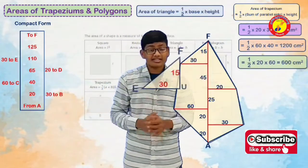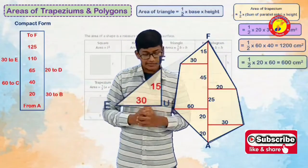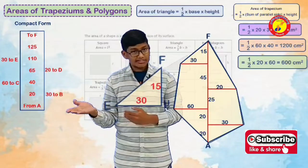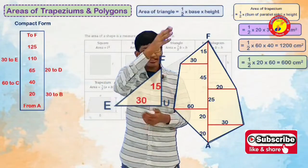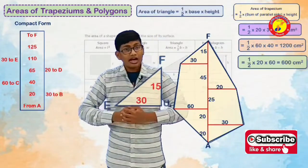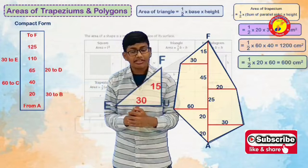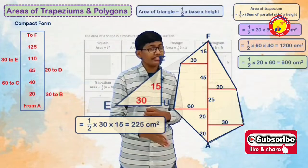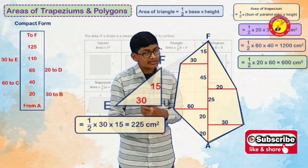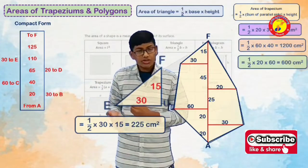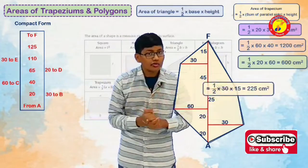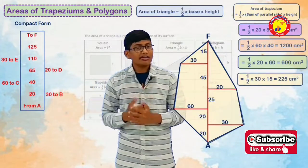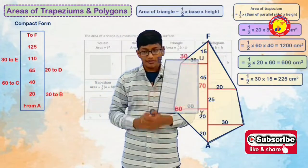Now we will go for the last right triangle. It has a base 30 cm and height 15 cm. After calculation, we will get half into 30 into 15, which is nothing but 225 cm square. Now the triangle part is over but the trapezium part is still left.